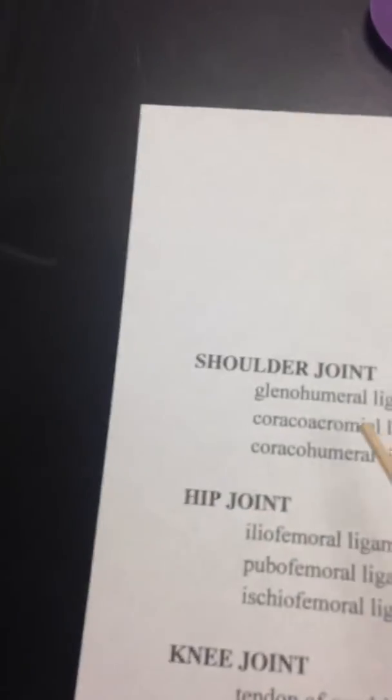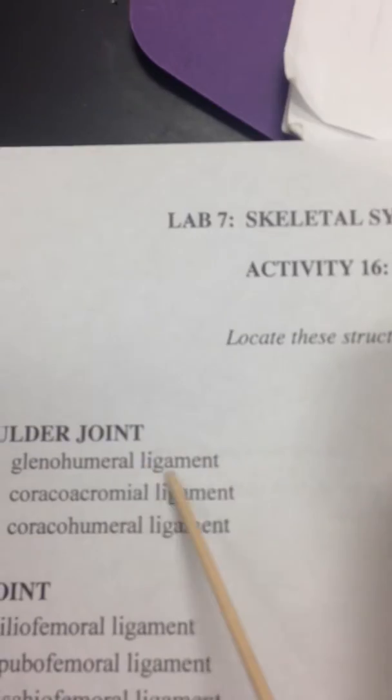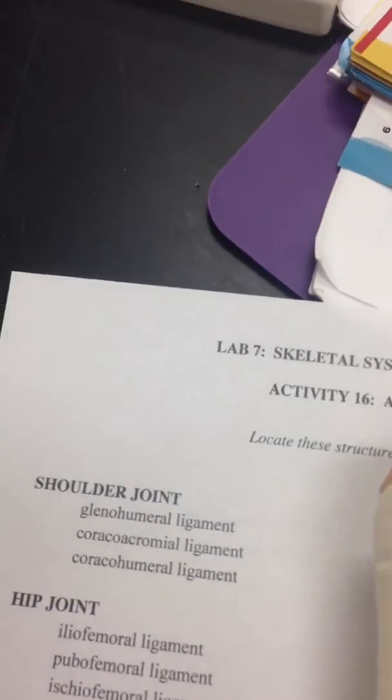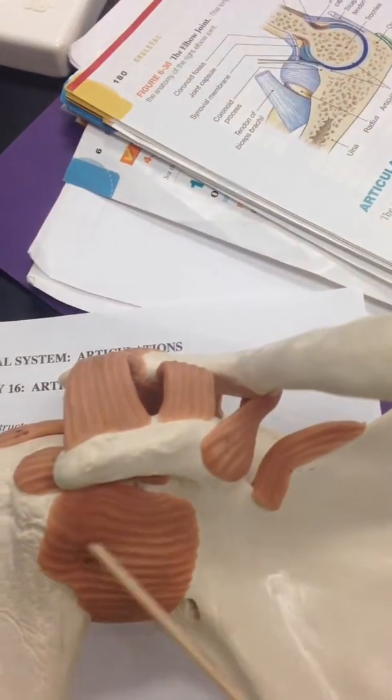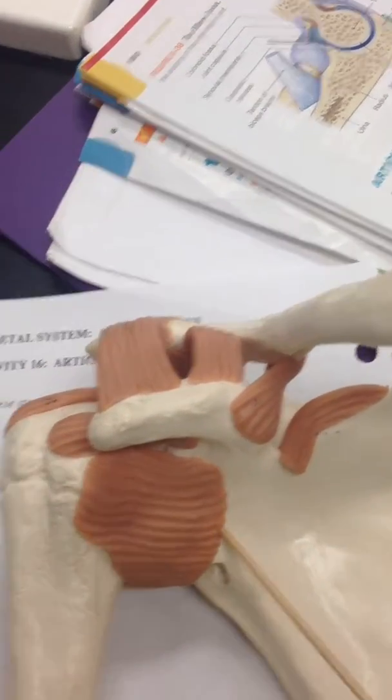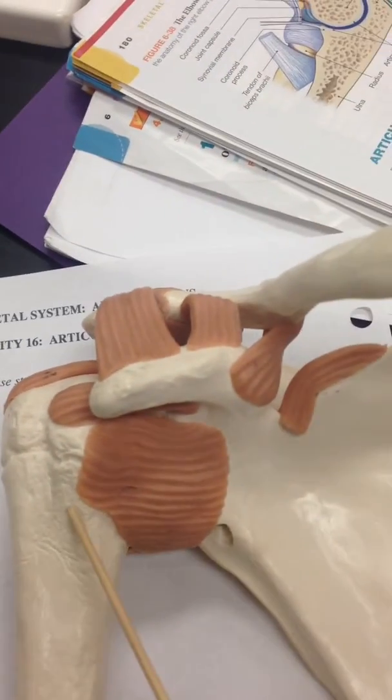So we want to find the glenohumeral ligament. The glenohumeral ligament is right here. It attaches the scapula to the humerus.